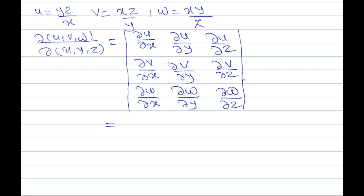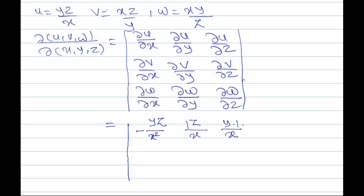We have the values of u, v, w and we will differentiate them with respect to x, y, z. Differentiation of u with respect to x: yz · (−1/x²), so −yz/x². Differentiation of u with respect to y: z and x constant, differentiation of y is 1, so z/x. Differentiation of u with respect to z: y and x constant, differentiation of z is 1, so y/x.